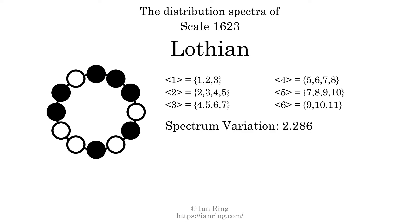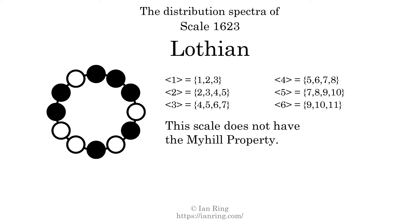The spectrum variation is the sum of all the widths, divided by the number of tones. The spectrum variation of this scale is 2.286. Since the variation is greater than 0, this indicates that the scale is not perfectly even. The highest spectrum width is 3. Since this is greater than 1, we know that this scale is not maximally even. If every spectrum has exactly 2 specific intervals, we call that the Myhill property. This scale does not have the Myhill property. Since the generic interval ranges overlap, this scale is an improper scale.